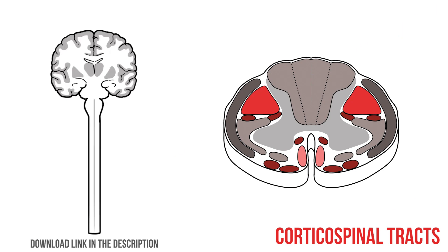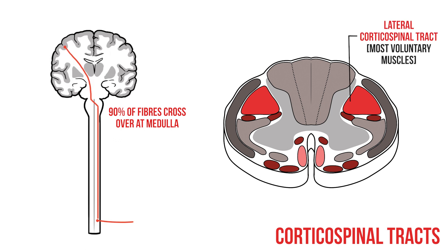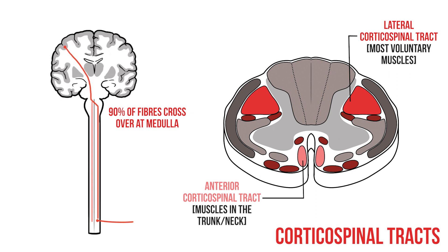Let's draw these corticospinal tracts out. We know from their name that they start in the cortex and ultimately head to the spinal cord. All of these fibers start in the motor cortex, then pass through the internal capsule and enter the medulla. At this point the vast majority of fibers will decussate, crossing over to the other side of the body, before traveling down the spinal cord and synapsing at the appropriate vertical level. These fibers form the large lateral corticospinal tract and control most of the muscles in the body. The other corticospinal fibers travel down the ipsilateral side of the spinal cord to form the smaller anterior corticospinal tract, which has a fairly limited function controlling muscles in the trunk and neck. These will eventually cross over to the other side of the body, but only when they reach the spinal level that they exit at.